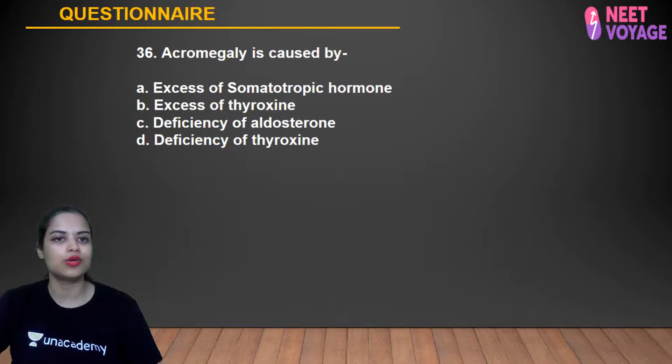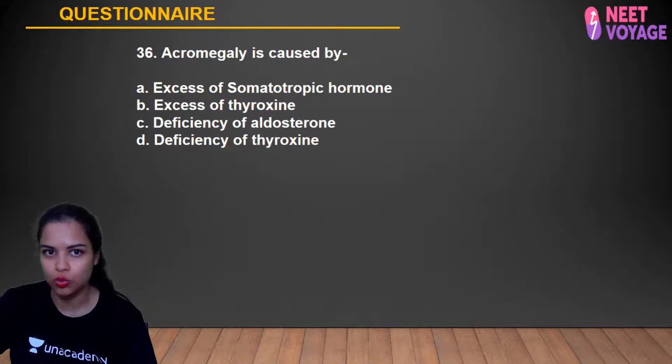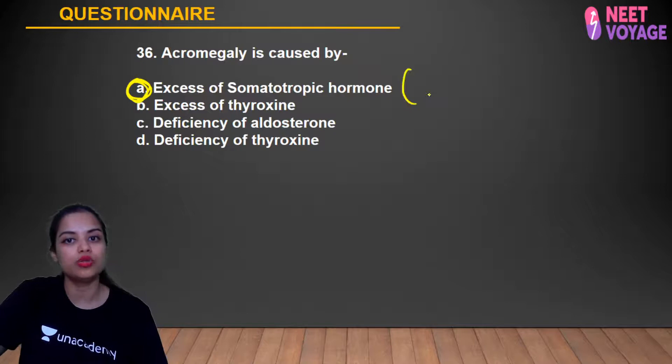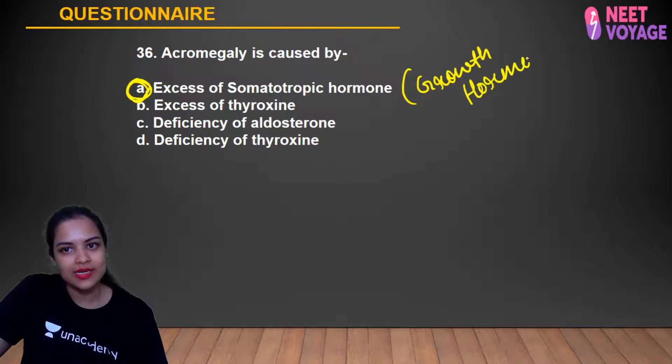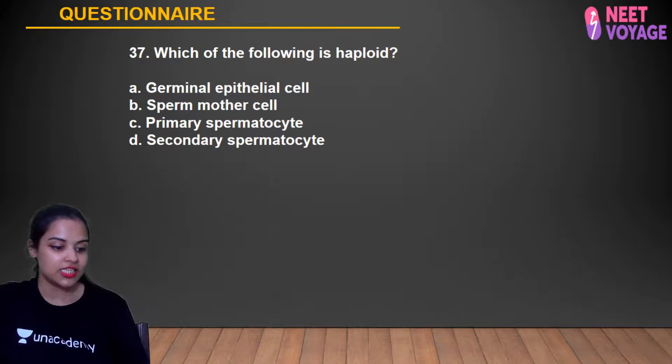Question 36: Acromegaly is caused by what? Acromegaly is due to over-secretion of growth hormone (somatotropic hormone) in the adult stage (after puberty). Excess somatotropic hormone in adults causes acromegaly — enlarged extremities. Anusha, Anshika, Samreen, Alok, Tanusha, Shashank, and Rittik gave the correct answer.